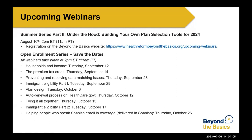Here you can see our upcoming webinars. As a follow-up to today's presentation, we'll be hosting Part 2, Under the Hood: Building Your Own Plan Selection Tools for 2024 on August 16th. We're also excited to give you a sneak peek of our annual fall webinar series. We'll cover core concepts like determining household size and income, premium tax credit eligibility, and resolving data matching issues. We're also adding new content on immigrant eligibility, including a webinar in Spanish focusing on enrollment issues for immigrants and people in mixed immigration status households.